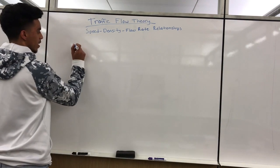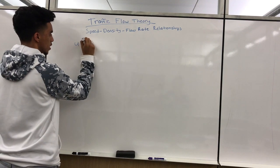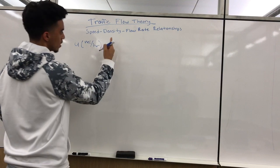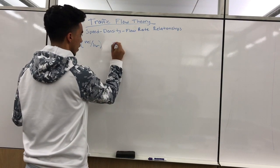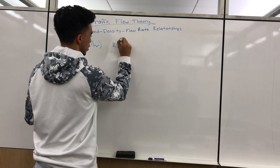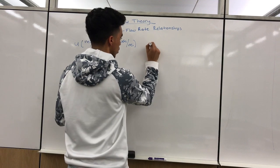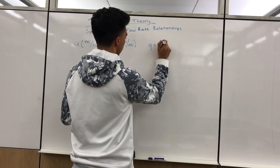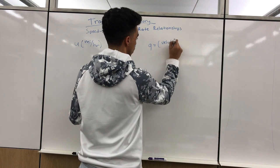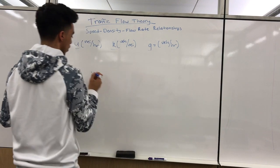Speed is defined as u, typically in units of distance over time such as miles per hour. Density is defined as k, in vehicles per distance such as vehicles per mile. Flow rate is defined as q, typically in vehicles per hour.